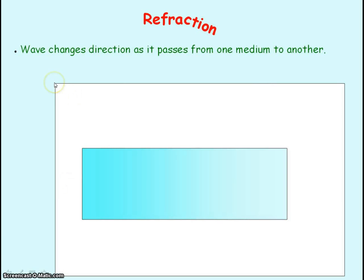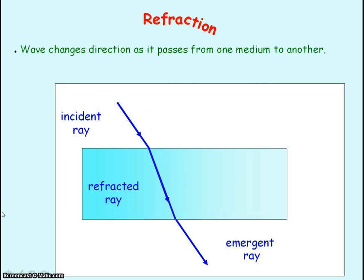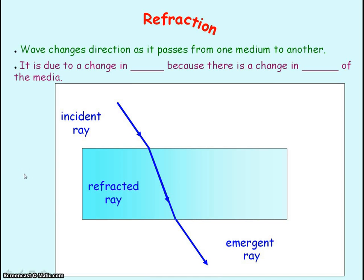Refraction is when a wave changes direction as it passes from one medium to another. Here we have the incident ray, then it's entering a new medium and being refracted. This is the refracted ray, and here you have the emergent ray — the ray coming out of the medium. Refraction is due to the wave changing its speed in a different medium, because the medium has a different density.